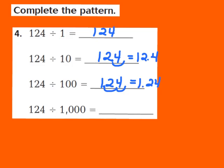Now let's look at the last part in our pattern. We have 124 being divided by 1,000. In 1,000, there are three zeros. So I'm going to move my decimal point three places to the left. I write my 124, place the decimal behind the 4, and move it one, two, three places to the left — so the decimal now falls in front of the 1. My quotient turns out to be 124 thousandths. Because once again, as you divide by increasing powers of 10, the decimal point moves one place to the left for each increasing power of 10.